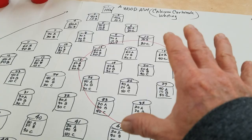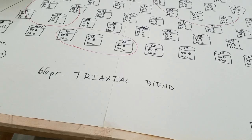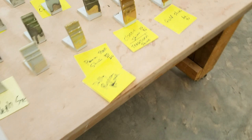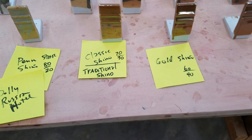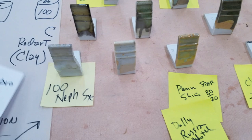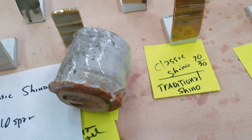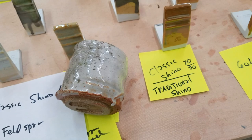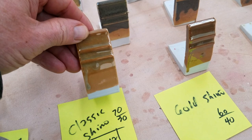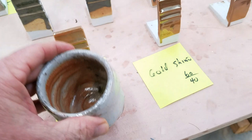Here is a glaze called classic chino - it's 70 feldspar, 30 clay. So that would be this recipe. Here's an example: it's a kind of white glaze because I used kaolin and ball clay, not red art. But this tile uses red art, so you can see it gives it some color and golden tone - that's because you get iron in there.